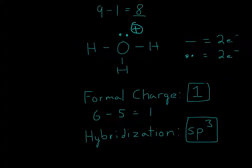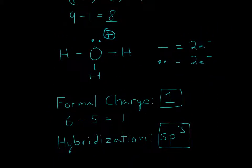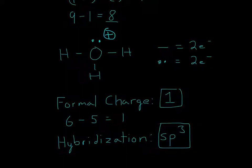Now the next thing is hybridization. For this, we count the number of domains: 1, 2, 3, 4 — 4 domains in total. Remember that the exponents have to equal the number of domains, so 1 plus 3 is equal to 4 domains. So this oxygen will be sp3 hybridized. I hope that helped, and thanks for watching.